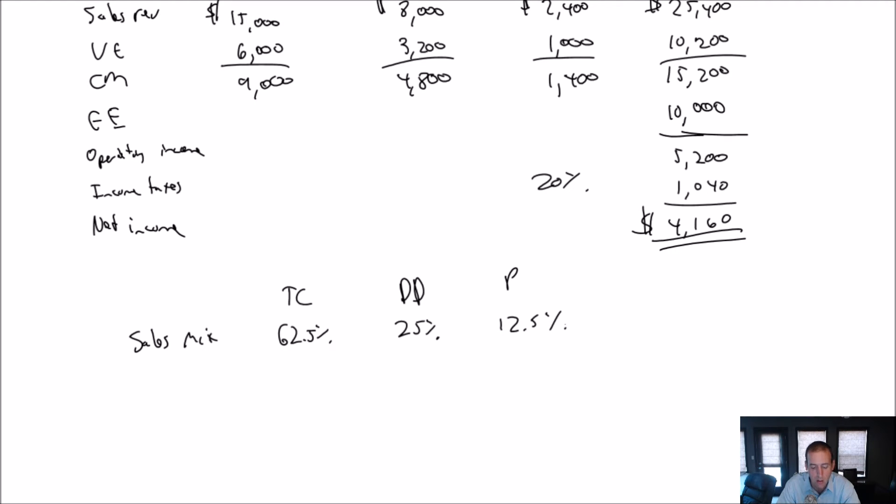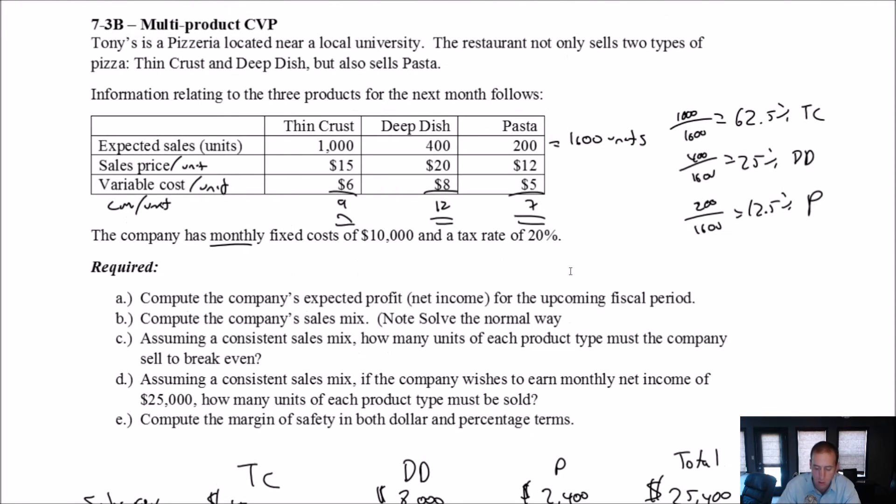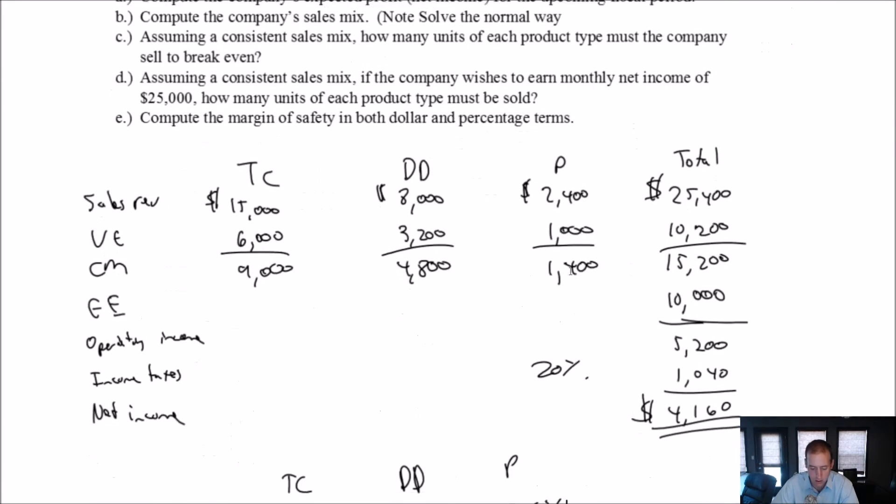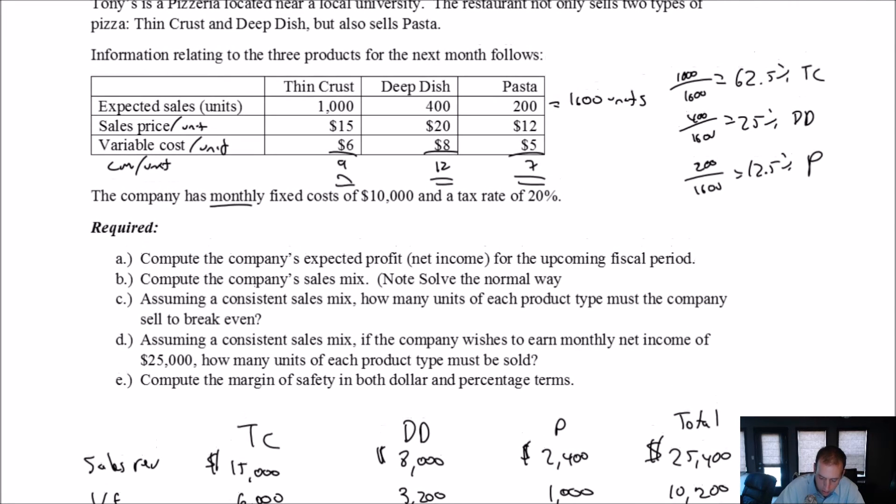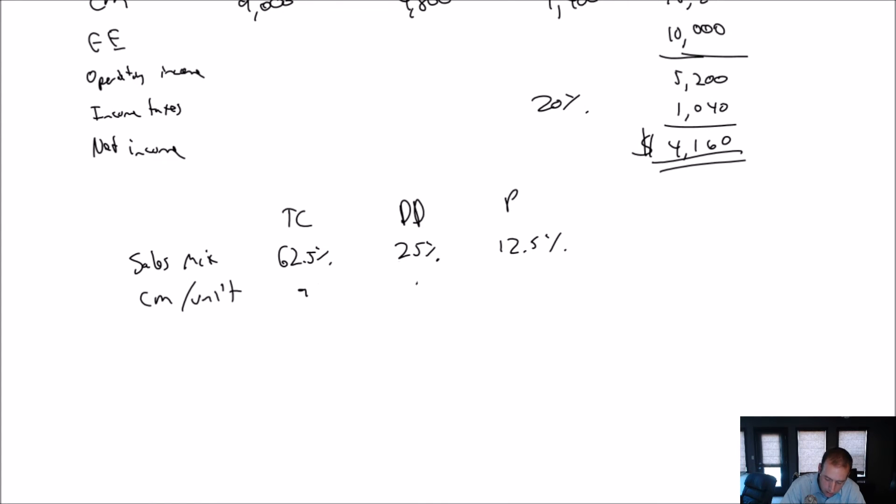Now, remember why we're doing this. We want to figure out our weighted average contribution margin per unit. We know our contribution margin for each of these units, 9, 12 and 7, but we need to know what the average customer is putting into our till in terms of contribution margin. And that means we weight them according to which units we sell the most of. So, we take the CM per unit and we go 9, 12 and 7. And so, of course, when we're averaging this, we could add the 3 together and divide by 3, but the one that should have the most weight is the 9, the second most weight is the 12, and the one with the least weight is the 7.